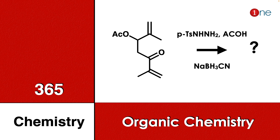Welcome to One Chemistry. This is the 365 Chemistry Series — organic chemistry questions for you. Here you have a long chain compound with two alkene groups and a ketone. The ketone is in conjugated form. You react it with tosyl hydrazine under acidic conditions.